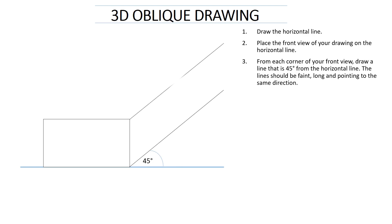Now let's complete the other lines from all the corners, making 45 degrees from the horizontal line. There they are, the four of them. Remember these lines must be faint and you just draw them as long as you can. It is not necessary at this point for them to be equal in size because we are still on the construction phase — we have not yet finalized our 3D drawing.